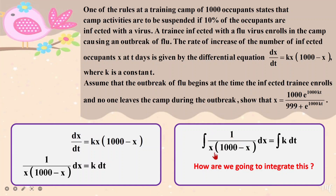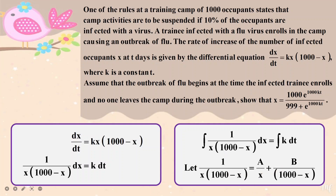Looking at the equation, when I expand it, I have to decide what I'm going to do. I'm going to use partial fractions. So I'm going to create a partial fraction for this equation, giving me a over x and b over 1000 minus x.